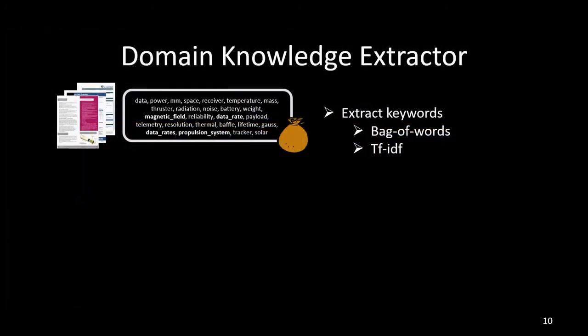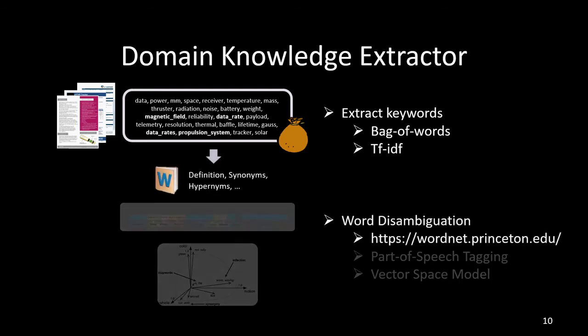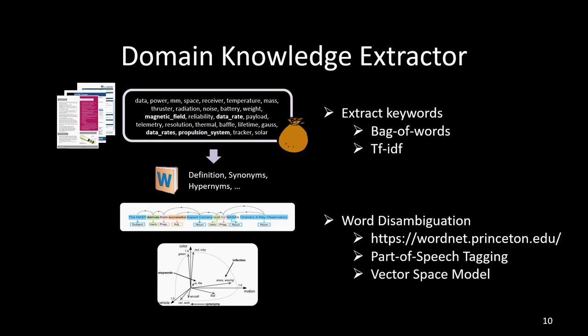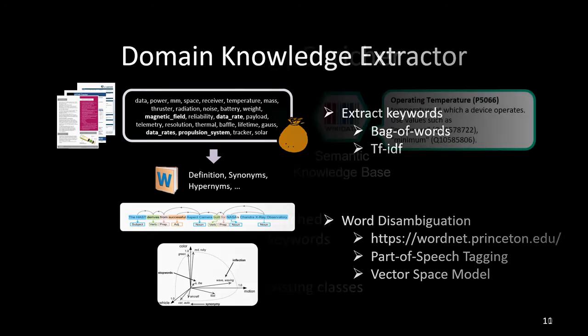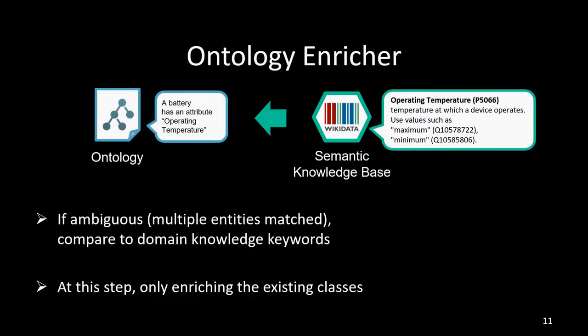For the domain knowledge extractor, we use TF-IDF to identify the most frequently used words and get correct definitions from the lexicon WordNet, as well as using part-of-speech tagging and a vector space model to disambiguate the words. In ontology enrichment, we enhance the initial ontology-based semantic knowledge derived from Wikidata. Ambiguity is resolved using keywords from the domain knowledge extractor.